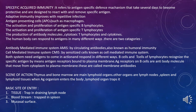Specific acquired immunity refers to the antigen-specific defense mechanism that takes several days to become protective and is designed to react with and remove specific antigens. Adaptive immunity — just as your environment attacks you, your body's antibodies become stronger or weaker in response: strong attack produces strong antibodies, weak attack produces weak ones, to fight against diseases.